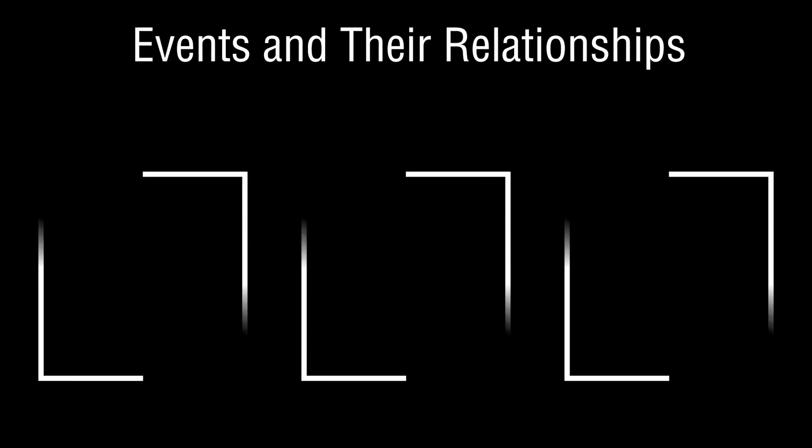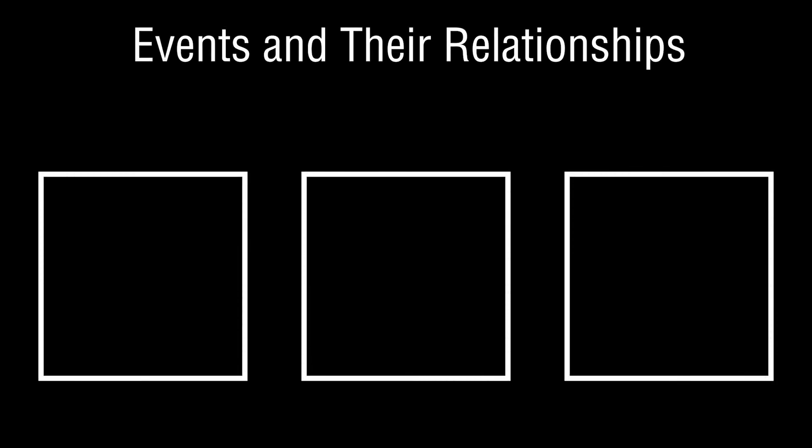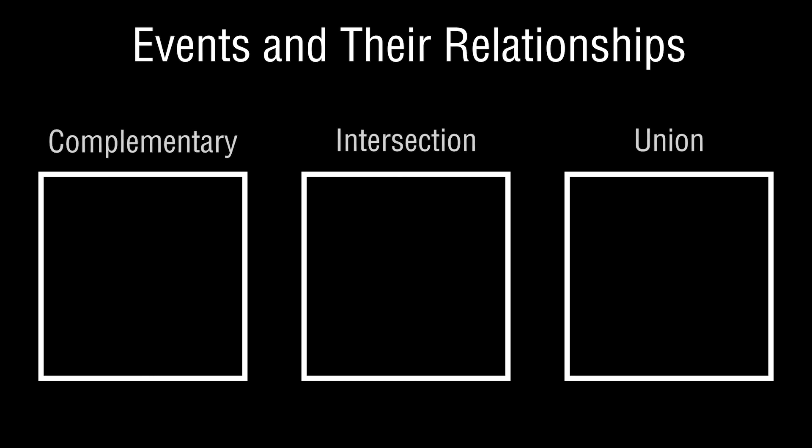When we define these events, we tend to do so through three core concepts: we can define events as being complementary, their intersection, and their union. This is not an exhaustive set of interactions, but these are some of the core ones that show up in probability.